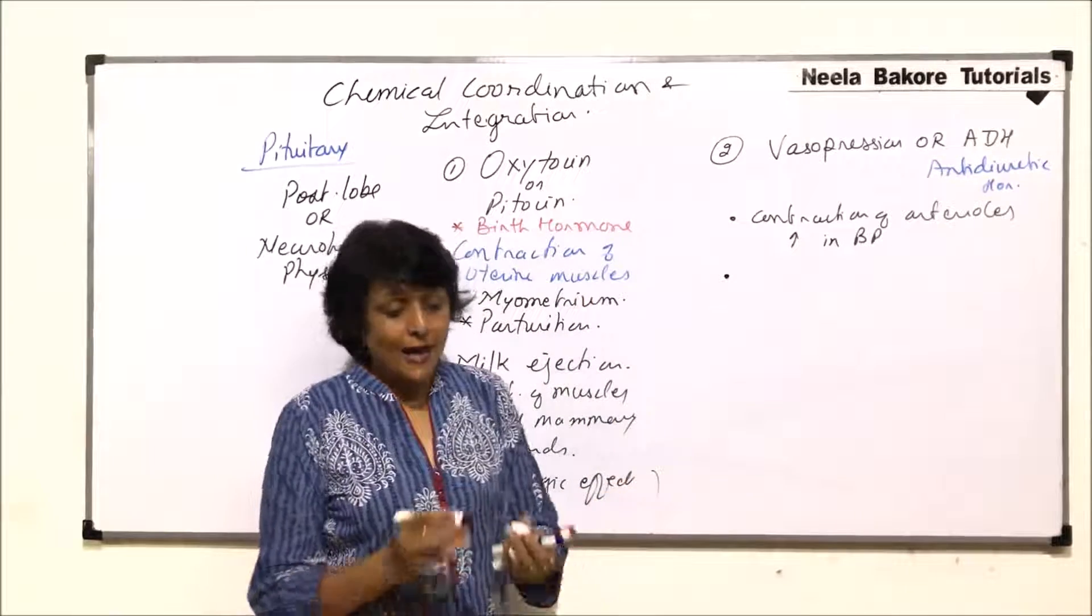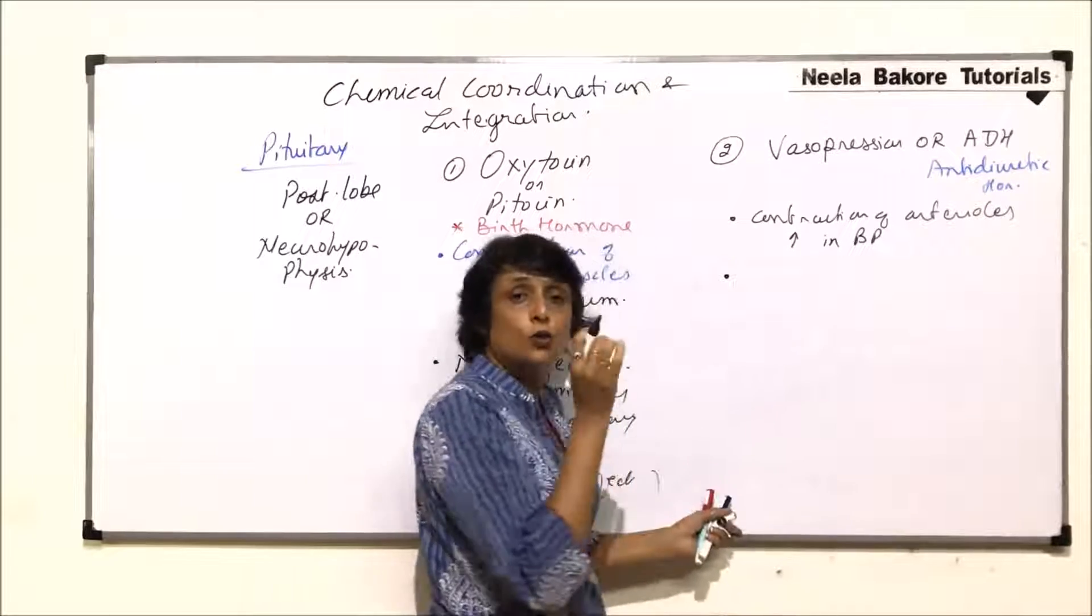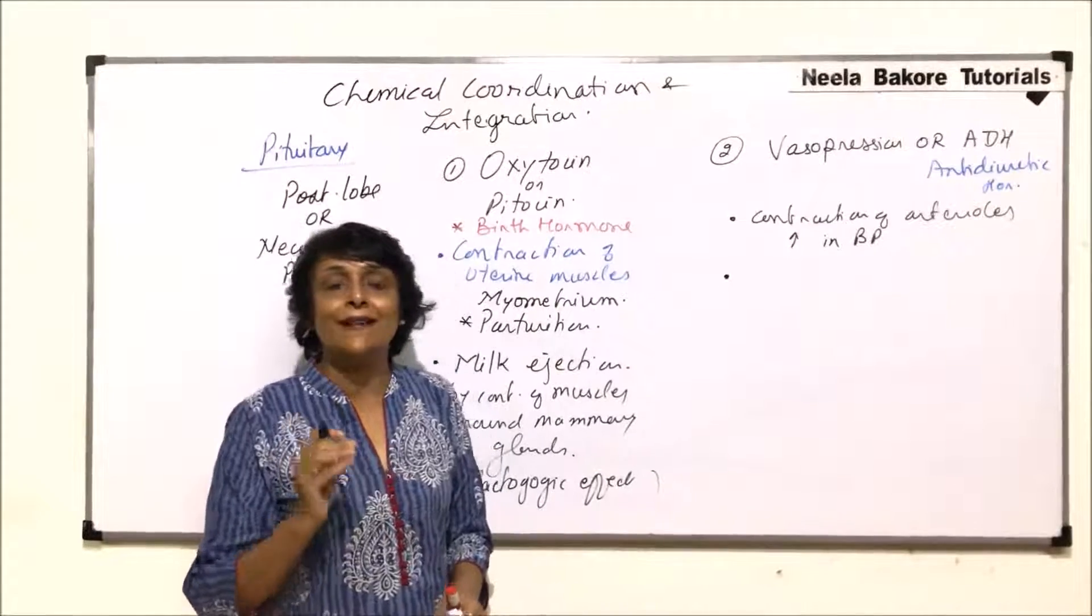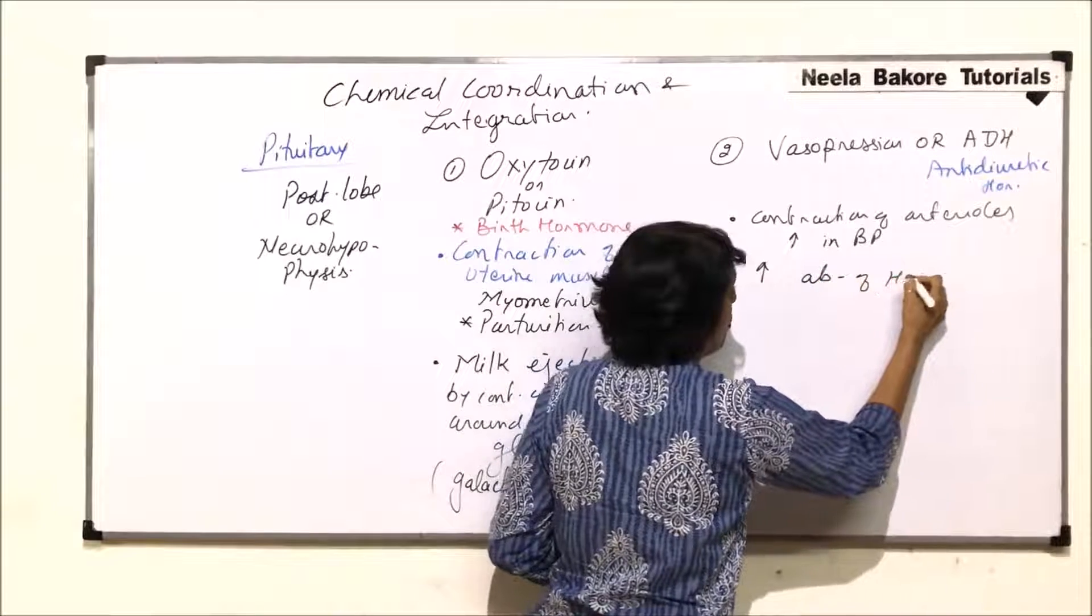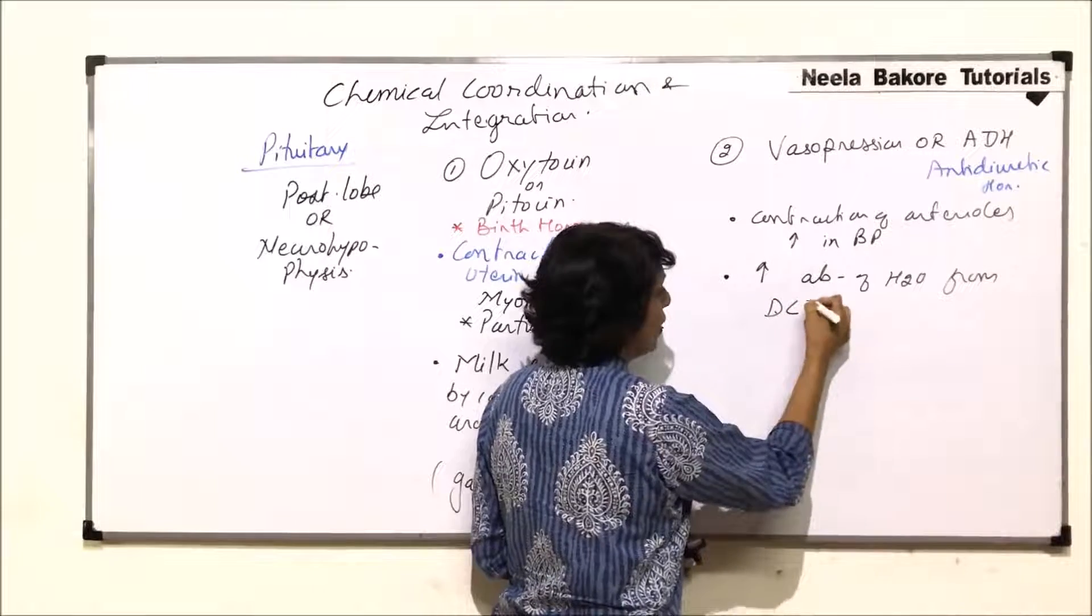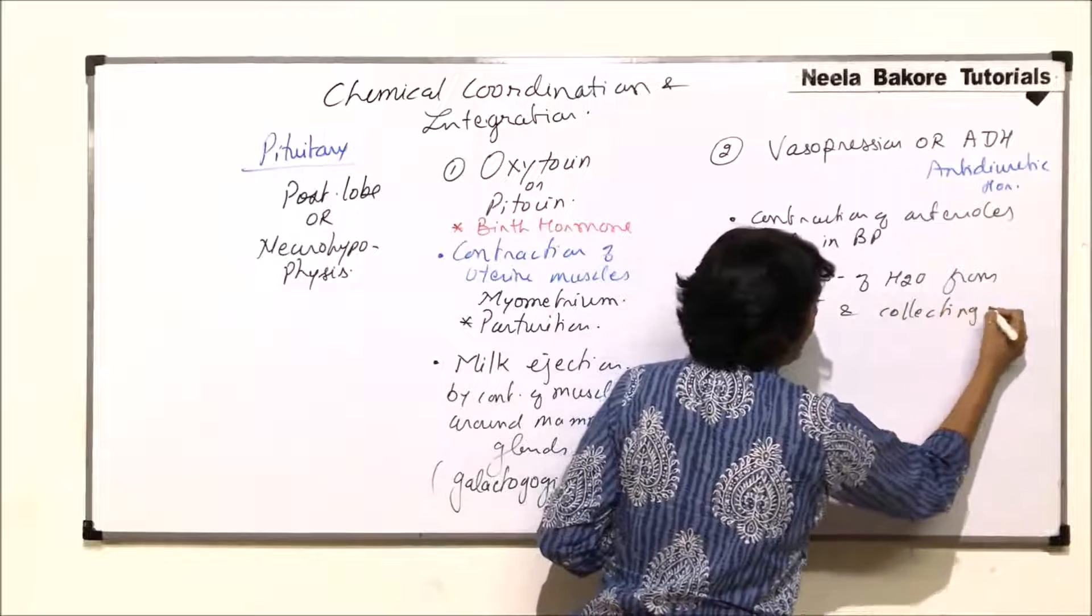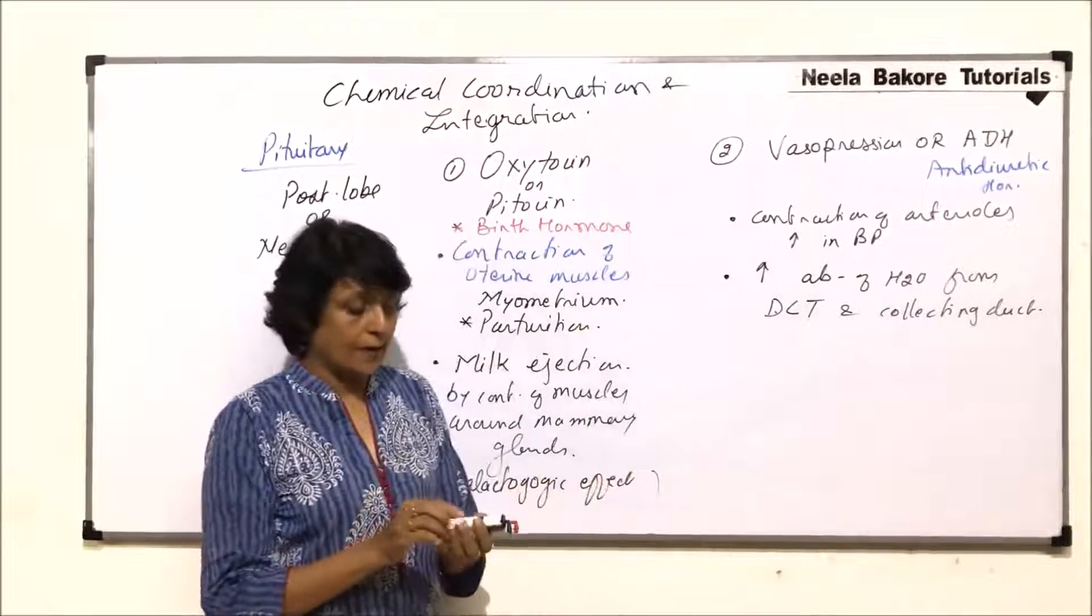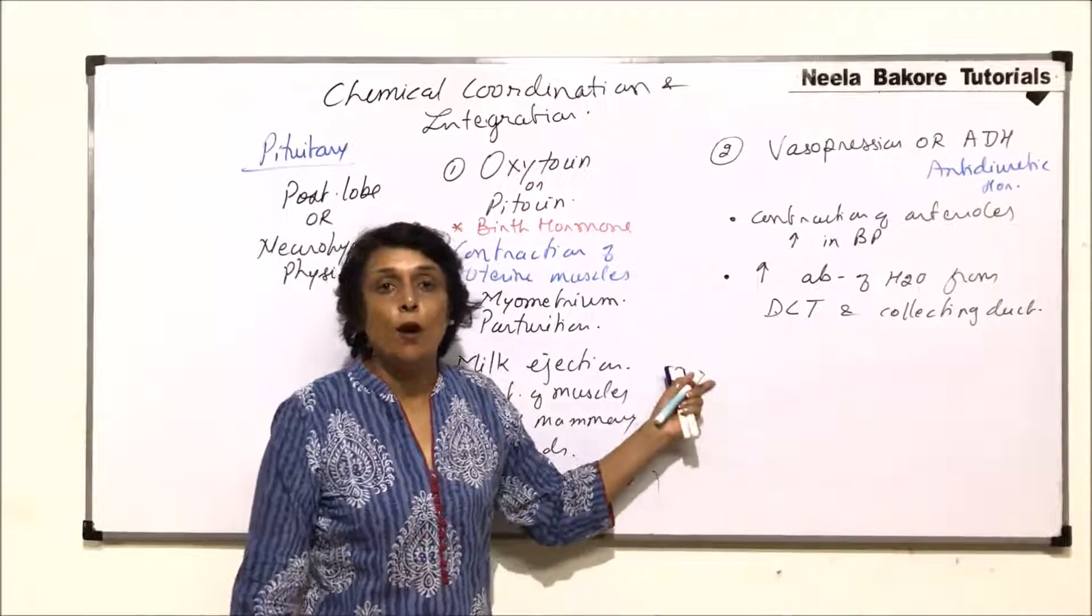The second function that it does is it helps in absorption of water from two parts of the nephron. One part is distal convoluted tubule and the other is the collecting duct. It increases absorption of water from DCT, that is distal convoluted tubule, and collecting duct. When this water is absorbed, there is more and more water getting retained in the body.